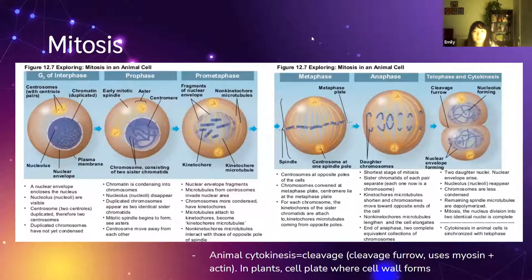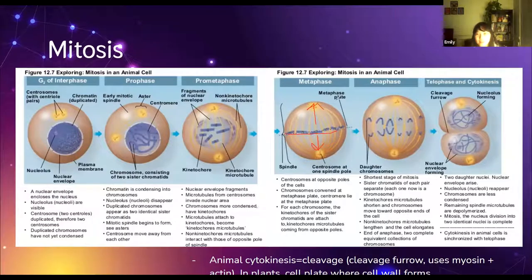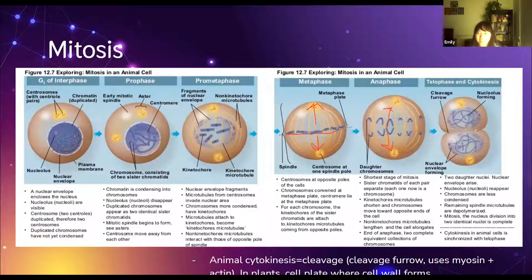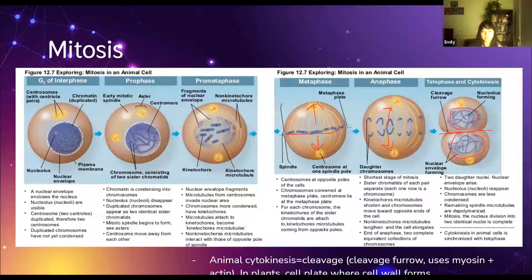In metaphase, the chromosomes actually line up in the center and start getting pulled apart by the spindles. In anaphase they actually do get pulled apart. Then in telophase, two new nuclei form. Finally, in cytokinesis, the cell pinches in half and you get two new cells. Those are the phases of mitosis.